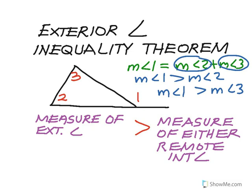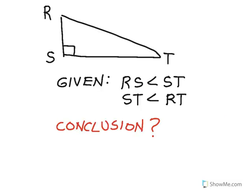Here's a triangle where it's given that side RS is less than side ST. I can mark RS with one tick mark and ST with more tick marks since ST is greater than RS. The second statement is that ST is less than RT, so RT has got to be longer still. Can I draw a conclusion? Yes — I can conclude without a doubt that RT must be greater than RS, or equivalently, RS must be less than RT.